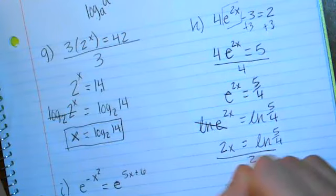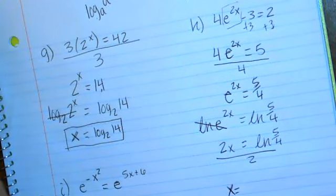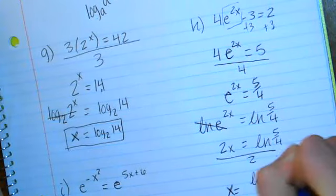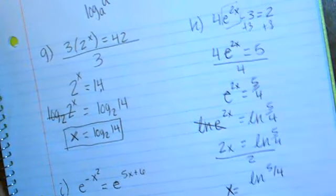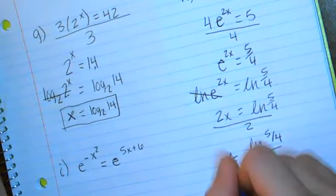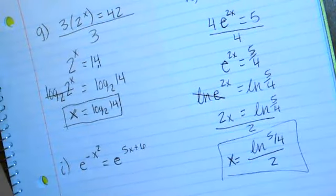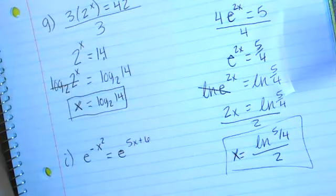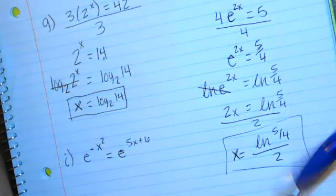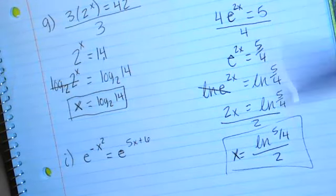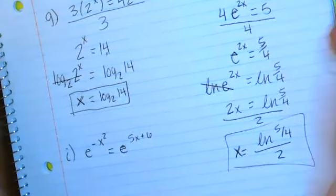The last step is dividing by 2, giving x equals ln(5/4) divided by 2. In your calculator, take the natural log of 5/4 first and then divide by 2. I want to see both the symbolic answer and your calculator answer so I can check your thought process and catch any mistakes.